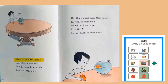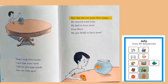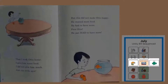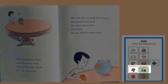Then I took Otto home. I gave him some food. I did not give him much, just one little spot. But this did not make Otto happy. He wanted more food. He had to have more. Poor Otto, he just had to have more. He thinks his fish is still hungry. I wonder if he'll put more food in the bowl for him.